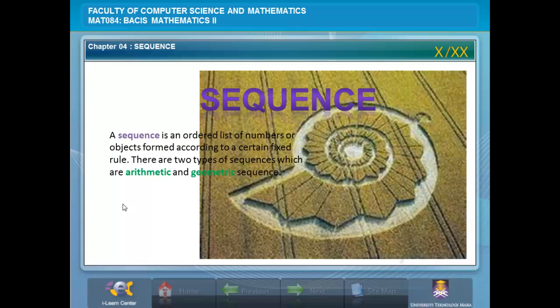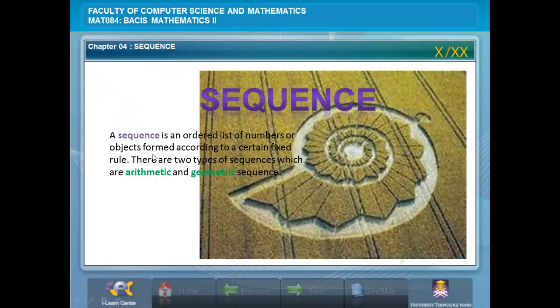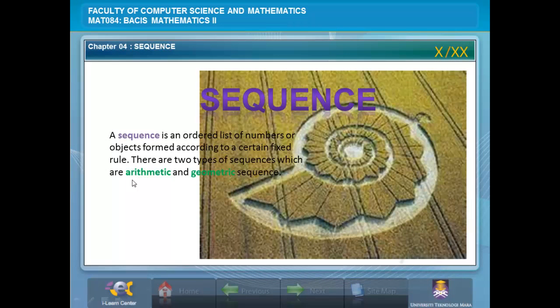What is sequence? A sequence is an ordered list of numbers or objects formed according to a certain fixed rule. There are two types of sequence which are arithmetic sequence and geometric sequence.